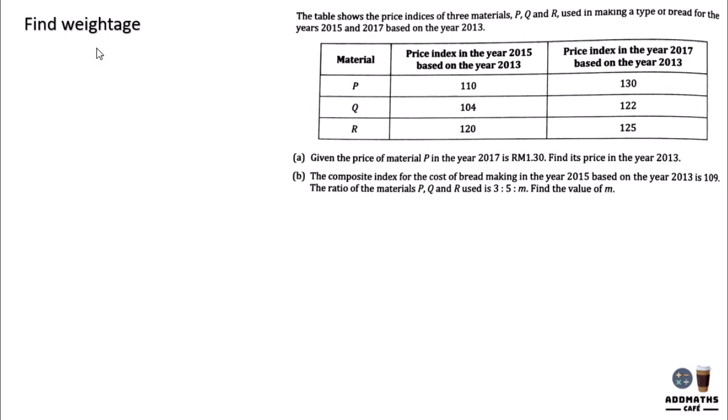Now you are required to find weightage. So first let's find A. Given the price of material P in the year 2017 is 1.3, find the year 2013 value.